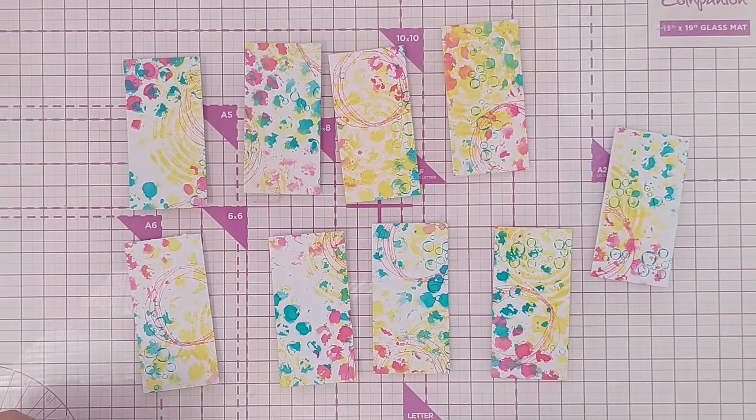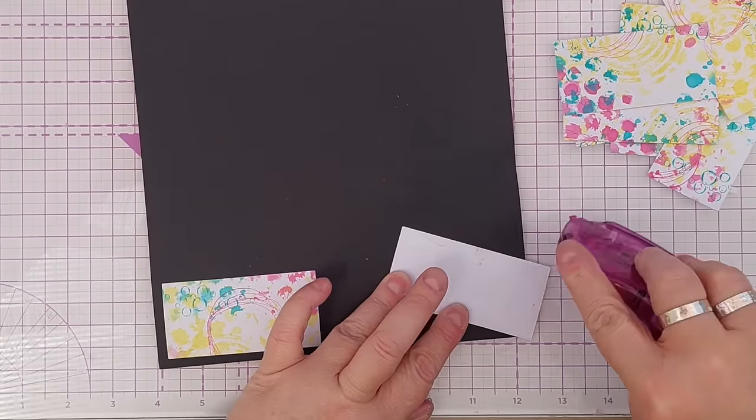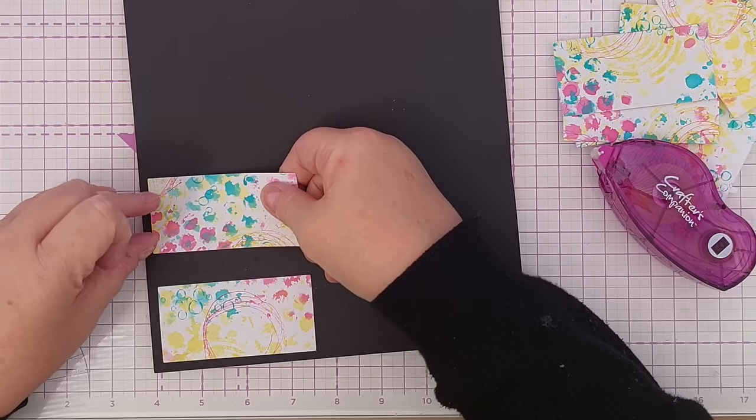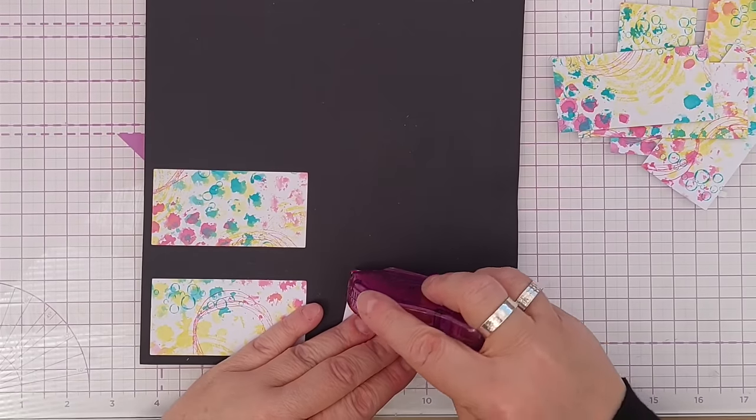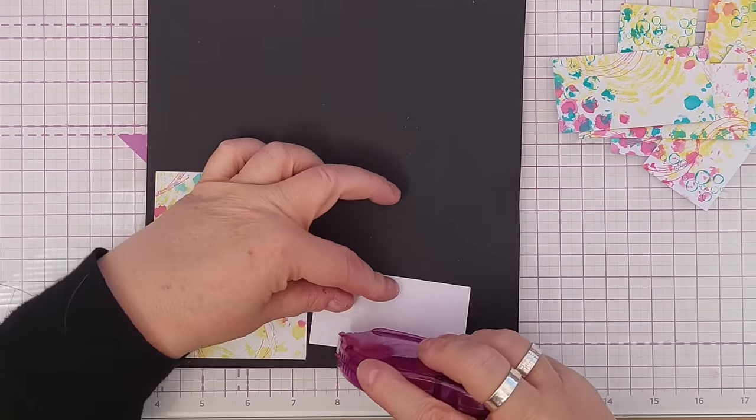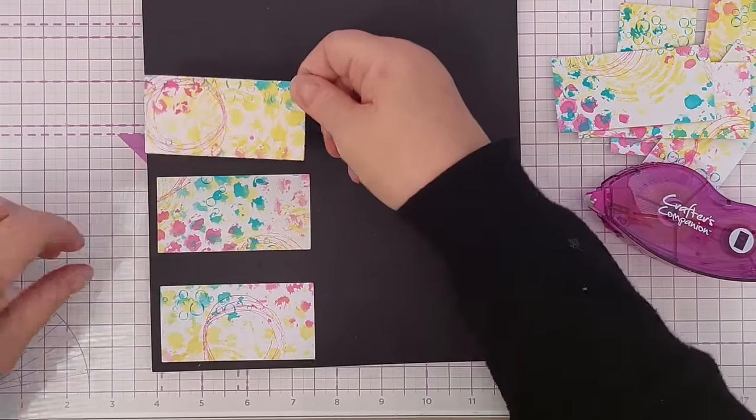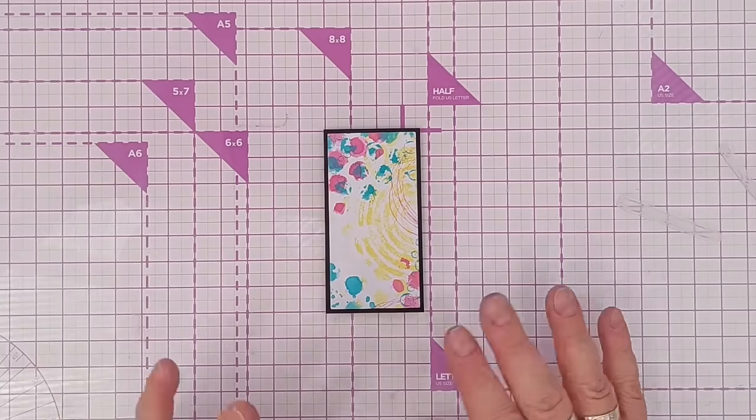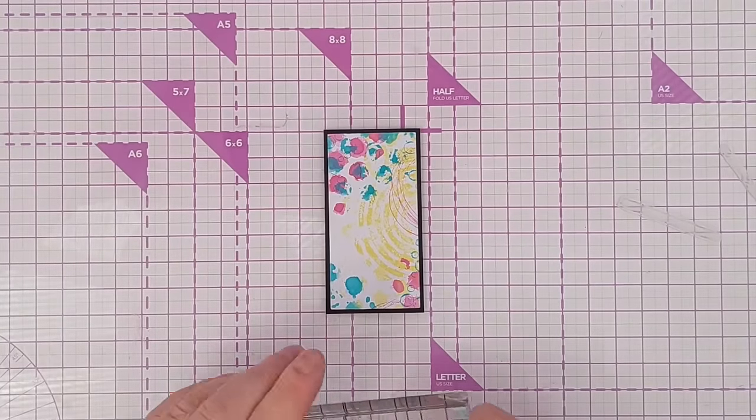So out of that I've managed to cut nine rectangles which I think is a good harvest. Next I'm going to mount each rectangle onto some black cardstock and then trim them out to give them a thin black border around the outside to start to bring in some of that contrast. So I'm going to work on just one now otherwise we'll be here forever if I show you how I do every single one but the same principles will apply.